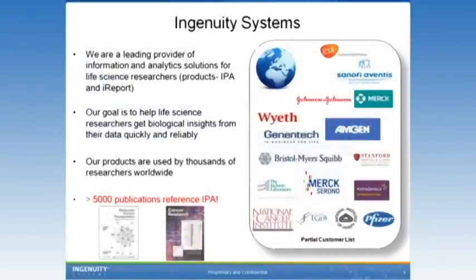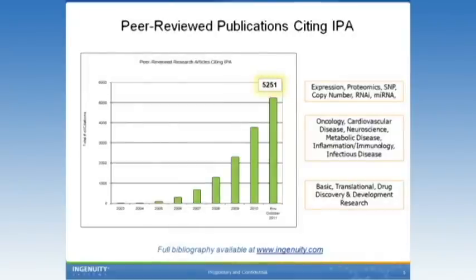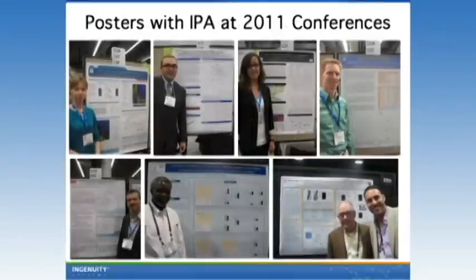For those of you not familiar with Ingenuity Systems, we have a variety of products. IPA is our flagship product. Our goal is to help life science researchers get biological insights from their data quickly and reliably. Many companies use our products — they're used by thousands of researchers worldwide. We have over 5,000 publications — to be exact, through October, 5,251 publications — that reference IPA. I recently came back from a conference in October in Montreal, and here's just a snapshot of posters from scientists at Harvard, Johns Hopkins, the NIH, and MD Anderson utilizing IPA.